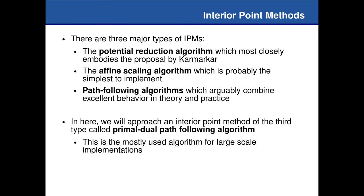Just giving some introduction on interior point methods: there are three relevant types. The first was the potential reduction algorithm motivated by Karmarkar's design. We've got the affine scaling algorithm, which is actually the simplest to implement. And for more than one to two decades now, people have been working with path-following algorithms, which are among the best solutions nowadays to tackle convex optimization problems by walking inside the feasible region defined by the constraints.